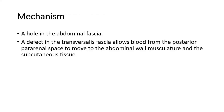For its mechanism, it is due to a hole in the abdominal fascia. A defect in the transversalis fascia allows blood from the posterior perarenal space to move to the abdominal wall musculature and the subcutaneous tissue, hence causing the bruising appearance on the flanks.